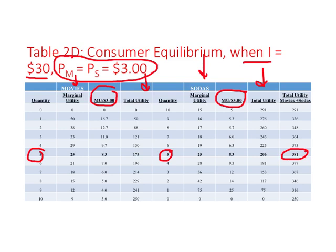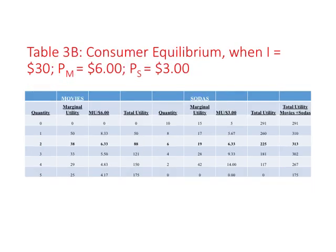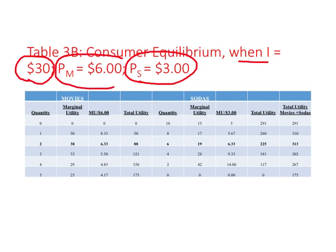Now let us repeat that exercise when the financial situation changes. Income stays the same at $30, price of sodas stays the same at $3, but the only thing that has changed is the price of movies — it has increased from $3 to $6. Let us repeat the steps we had taken to find consumer equilibrium with these new financial numbers.